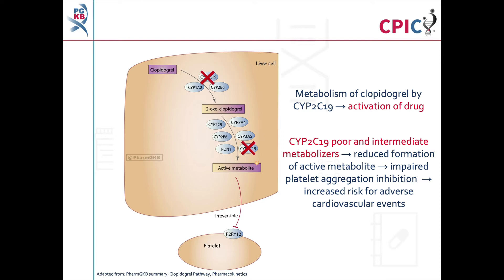CYP2C19 loss-of-function alleles result in impaired formation of the active metabolites of clopidogrel due to insufficient CYP2C19 enzyme activity. This results in reduced inhibition of platelet aggregation, which increases the risk for serious adverse cardiovascular events that result from platelet aggregation.